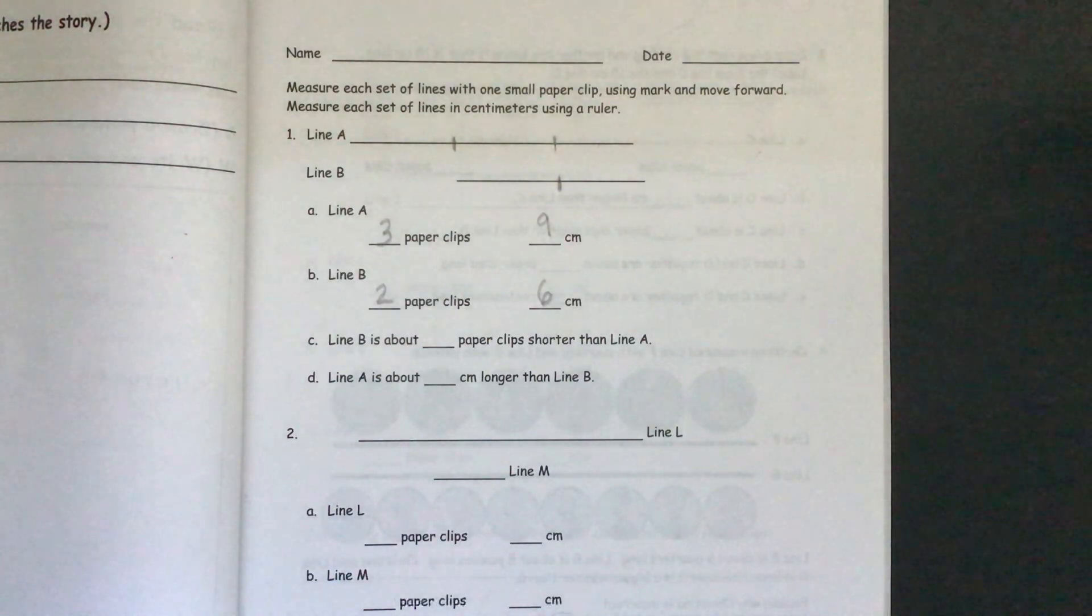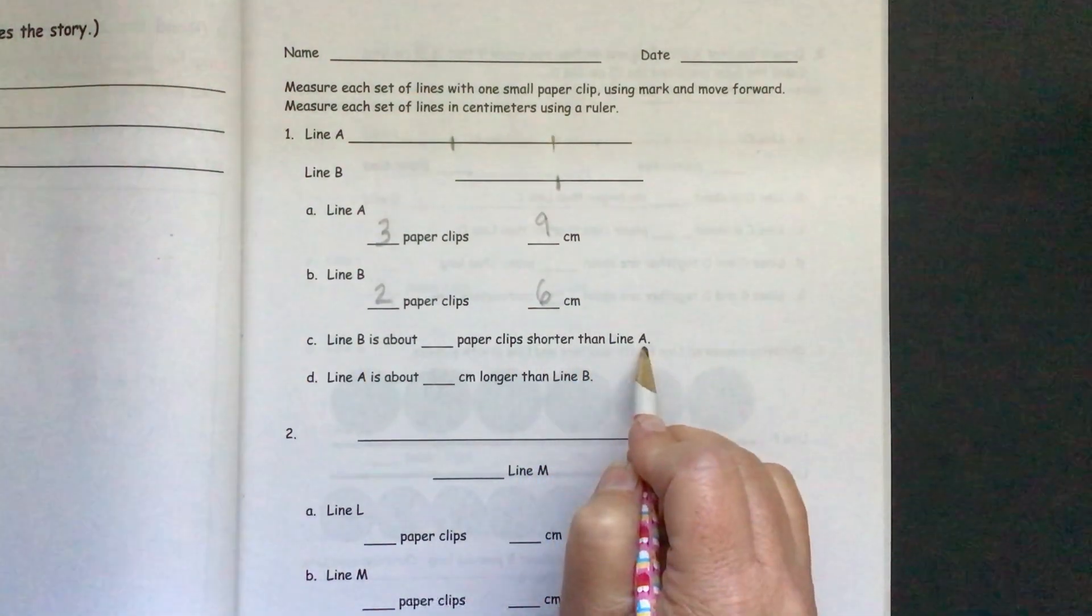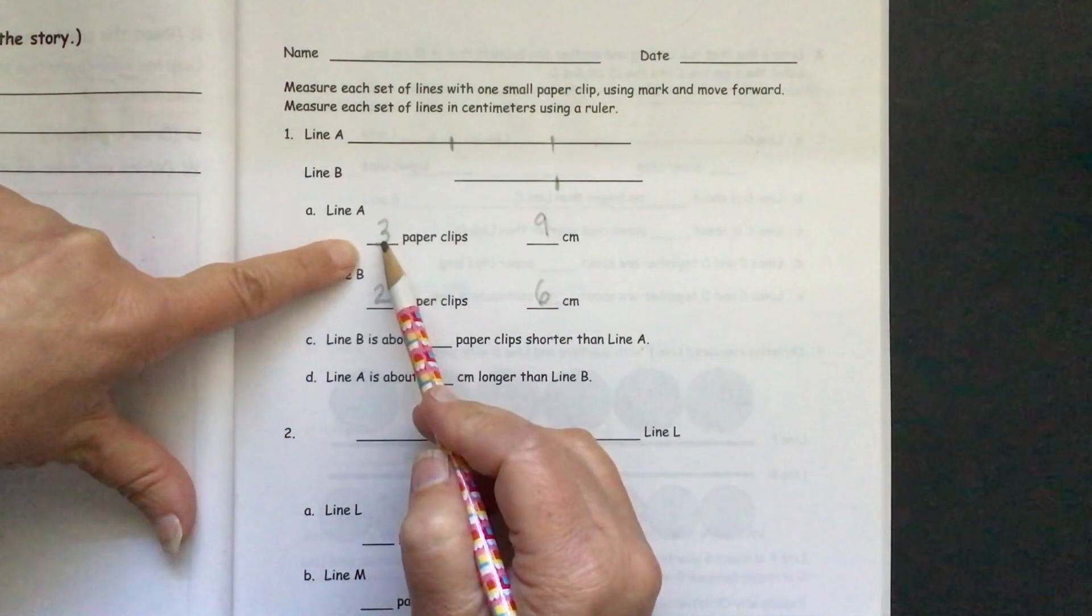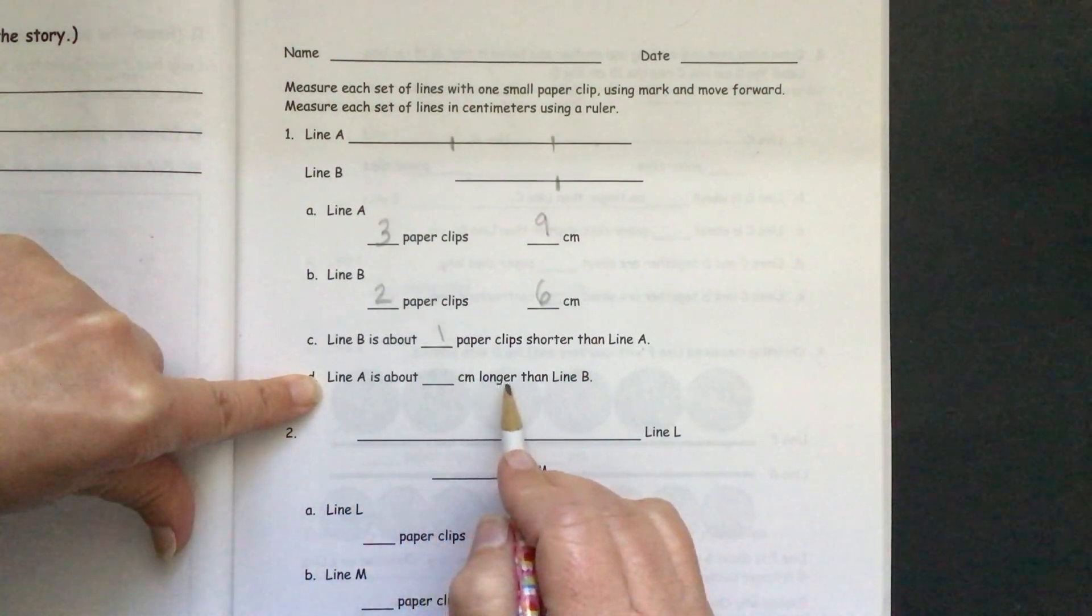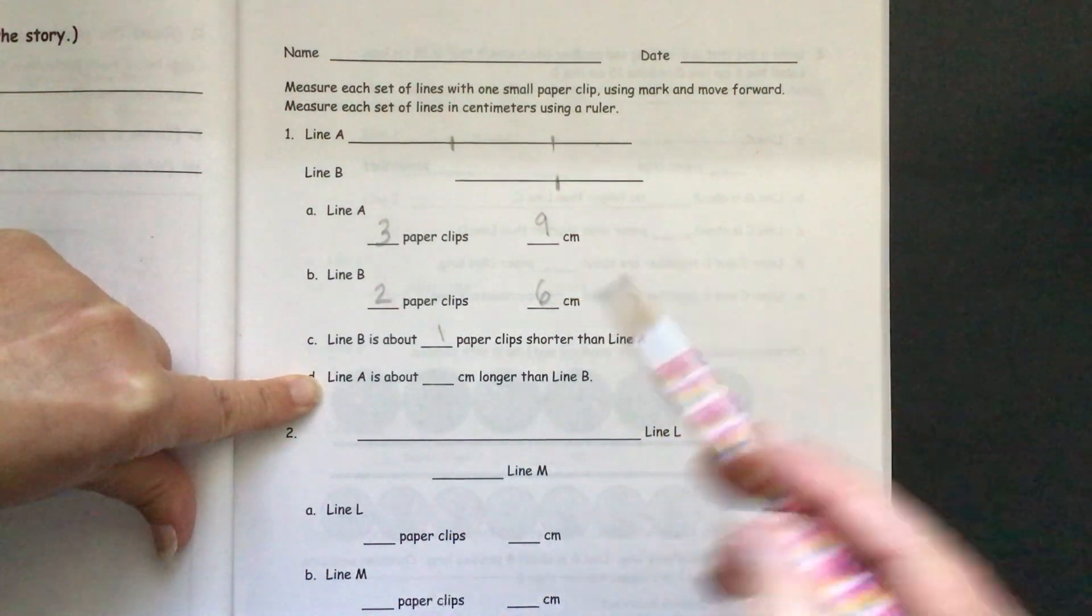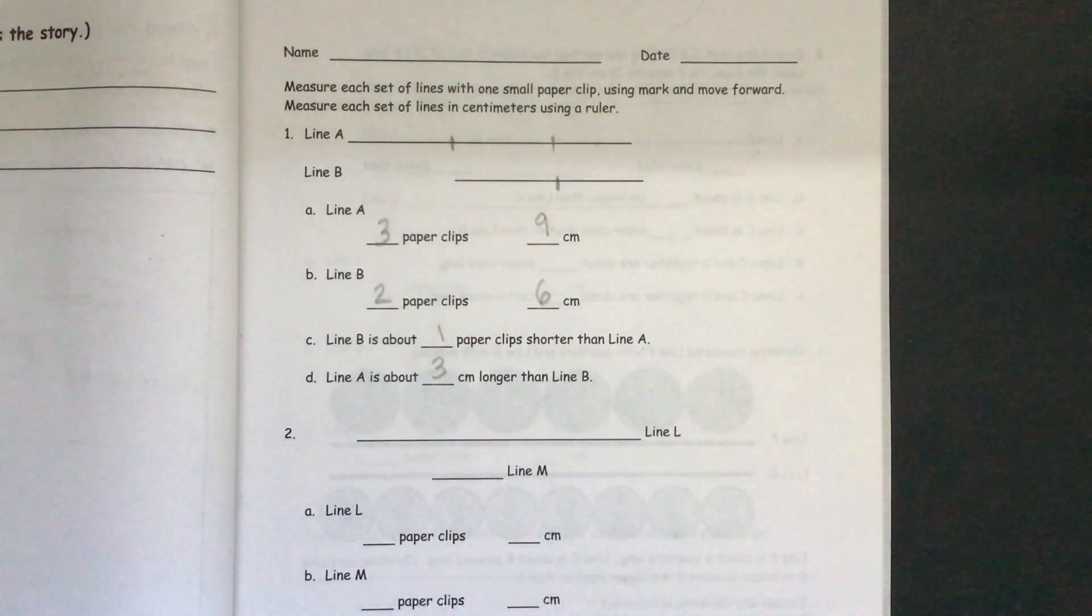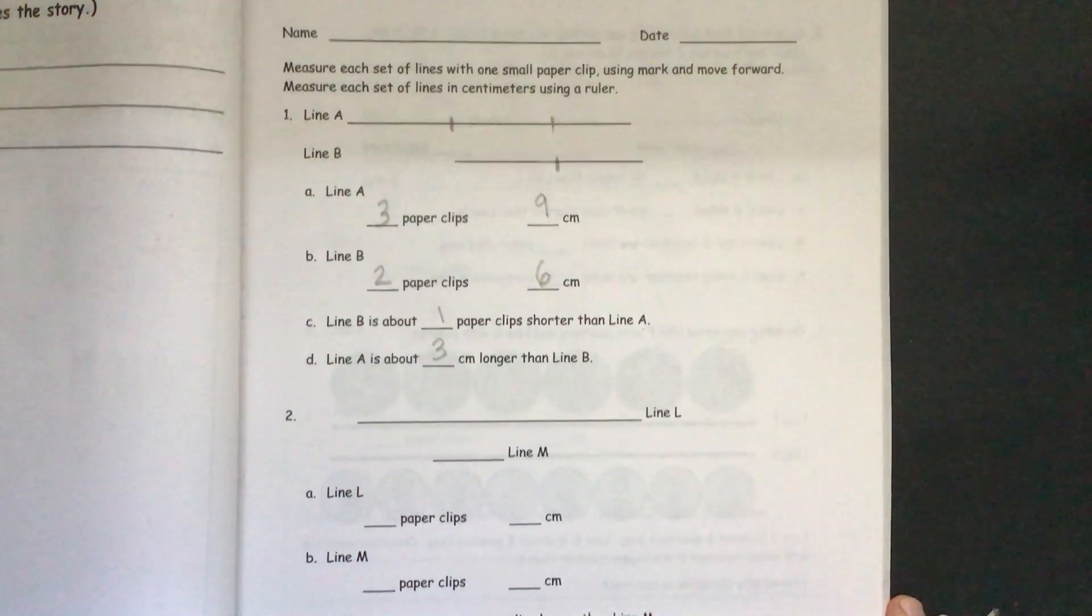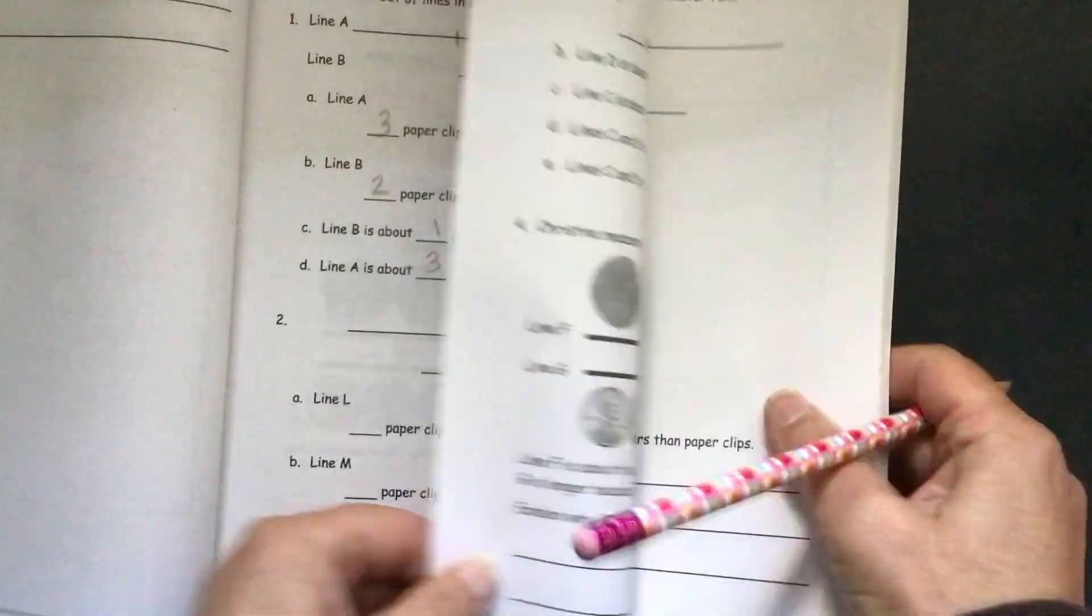So then we have line B is about blank paper clips shorter than line A. So looks like a math problem to me. Three minus two equals one. And line A is about blank cm longer than line B. So 9 cm minus 6 cm will be 3 cm. Then you'll need to do the same process measuring lines L and M and answering the questions and marking their measurements.